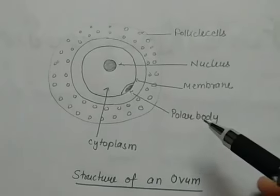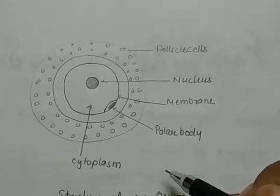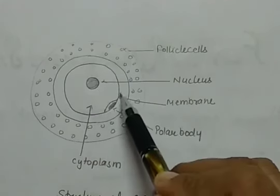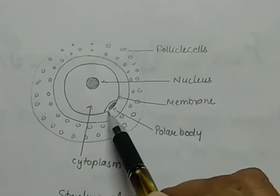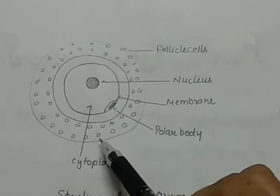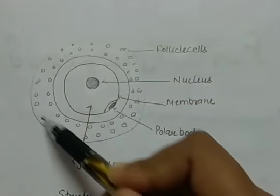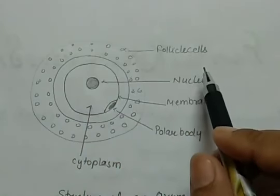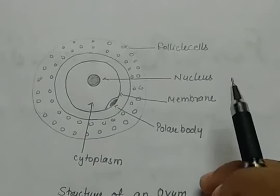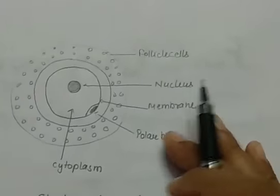Here we have the structure of an ovum — the female sex cell or egg. This egg cell has a central nucleus, a membrane around it, and one polar body which will later help in nourishment of the zygote. There is also cytoplasm, and radially arranged cells called follicle cells. When a girl child is born, the ovary already contains thousands of immature eggs.